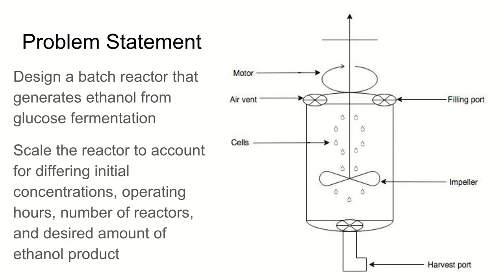Our objective was to design a batch reactor that generates ethanol from glucose fermentation, but also to ensure that this reactor could be scaled to account for differing initial concentrations, operating hours, number of reactors, and desired amount of ethanol product. All of these will be further explored throughout the presentation.